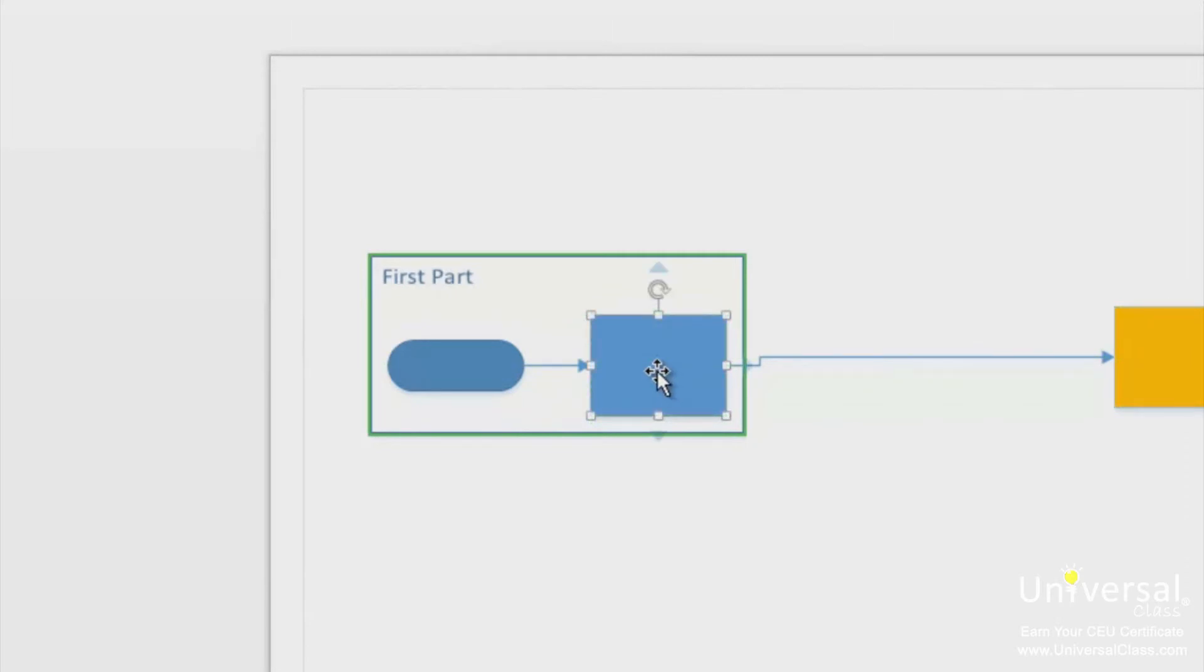You can also add the shape to the container by right-clicking on the shape and then going to container and then add to underlying container.